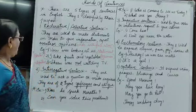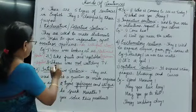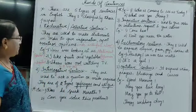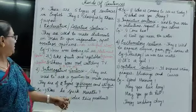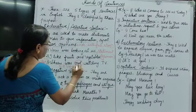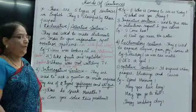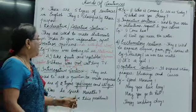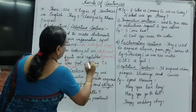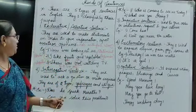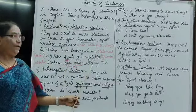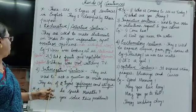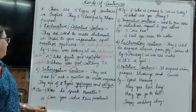The structure is: subject plus helping verb plus object. In a negative sentence, 'not' is placed between the helping verb (auxiliary verb) and the main verb. So 'Sharu was not watching TV' is the negative form, while the positive form would be 'Sharu was watching TV.' Now let's come to the next type: interrogative sentence.